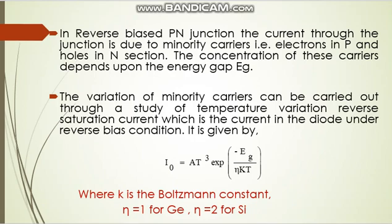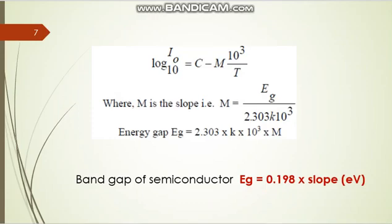In this formula, A is a constant, T is temperature, Eg is the energy gap, η equals 1 for germanium and 2 for silicon, and k is Boltzmann's constant. By applying logarithm on both sides, the equation simplifies to: log(I₀) base 10 = C − M × (1000/T). This is similar to the straight line equation Y = MX + C, where Y is replaced by log(I₀) and X by 1000/T, and M is the slope equal to Eg / (2.303 × η × k × 1000). Drawing a graph with 1000/T on the x-axis and log(I₀) on the y-axis gives a straight line.